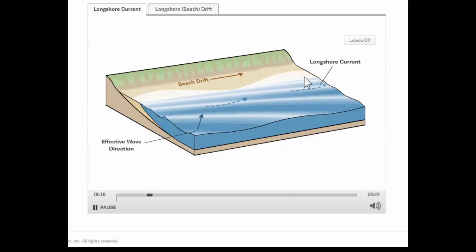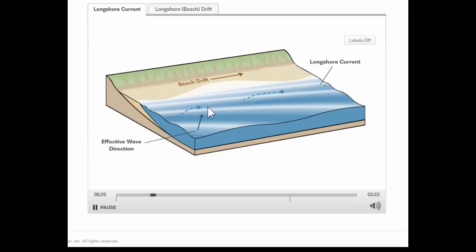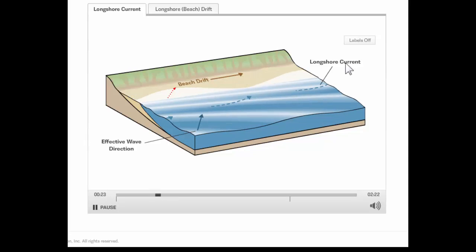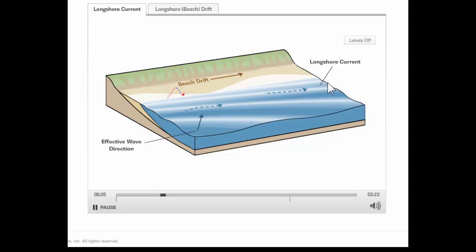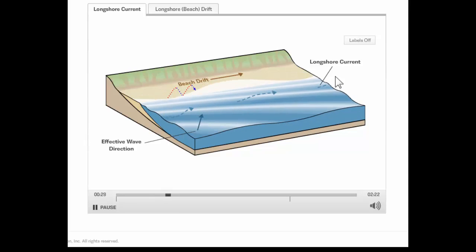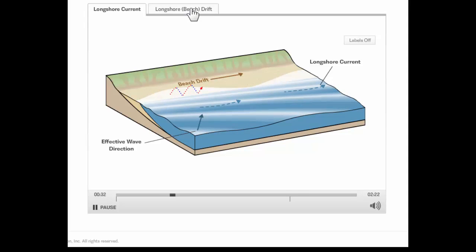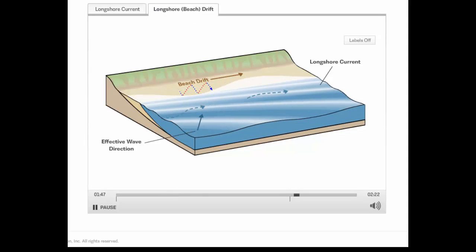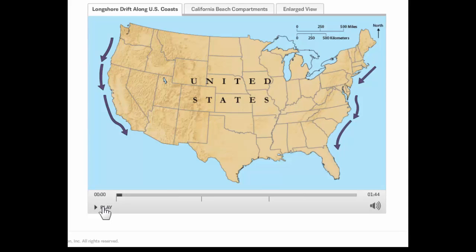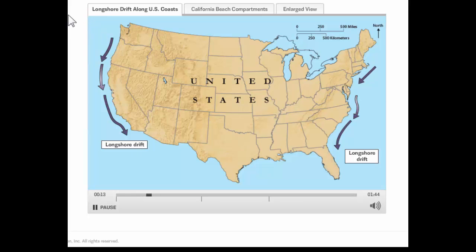This is called longshore drift or longshore transport. The movement of sand occurs not just on the beach itself but also in the surf zone, because the movement of the waves creates a current called a longshore current. If you look at the movement of sand by longshore drift along both coasts of the United States, you find that the net movement of sand is to the south, both along the west coast and the east coast. The reason is that most of our big waves come from the North Pacific on the west coast, or from the North Atlantic on the east coast, hitting the beach from north and pushing the sand southward.